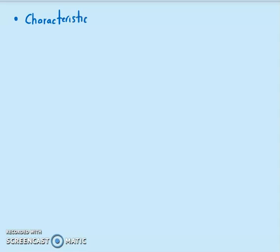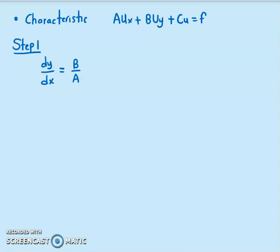There are four steps to use characteristic method. Step one is to find the characteristic curve known as dy/dx = B/A. Where does B/A come from? We are looking at first order PDE, so the A and B are the coefficient appearing in this first order PDE. Obviously, you need to integrate the solution to obtain y equals to something.